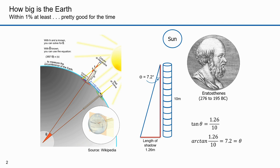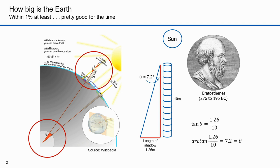Look at the picture on the left. The triangle formed by the pillar and its shadow is similar to the angle formed by the center of the earth, Syene, and Alexandria. From this, Eratosthenes knew that the angle between Syene and Alexandria is 7.2 degrees.